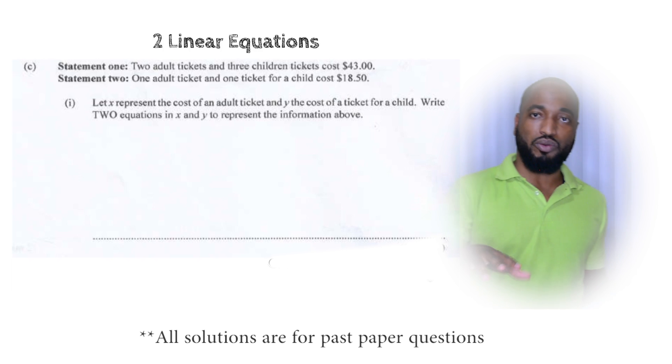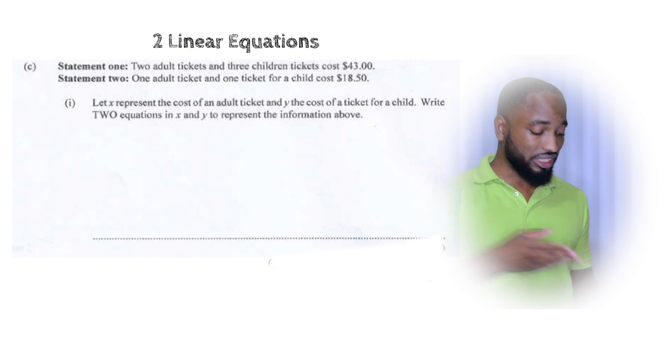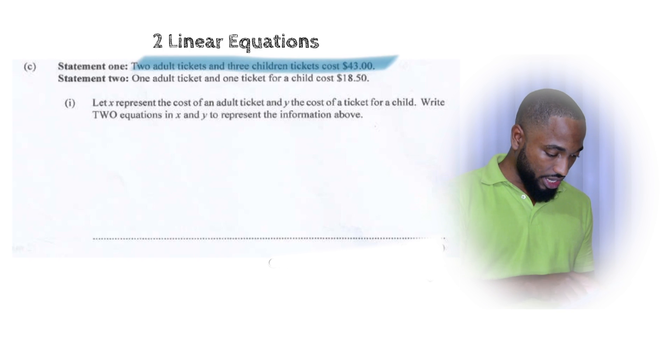All right. So this right here is like worst case scenario. Two adult tickets and three children tickets cost 43. Normally, you'll get two equations. You see any equation here? No equation. So now you have to go and generate your own equation. Of these two things, one statement here, another statement there, that should have been an equation. And you need to make two equations off of those two statements. So let me do that now.